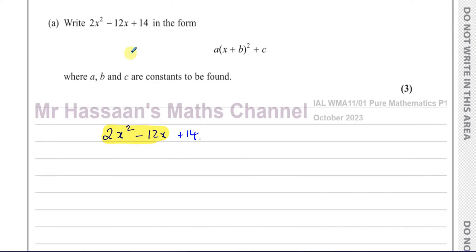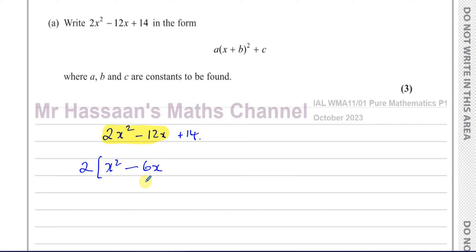I want it to say 1x², so I'm going to take out 2 regardless of whether it's a factor of the 12 or not. For example if this was a 9, I'd put a bracket and write x² minus 9/2 x — just divide by 2 because you've taken 2 out. The objective is not to find a common factor; the objective is to make this say 1x² so that when we complete the square it works out right.